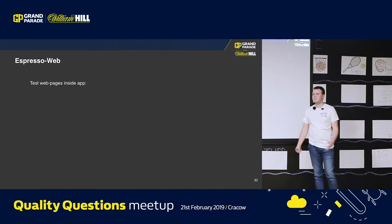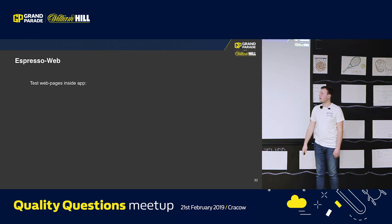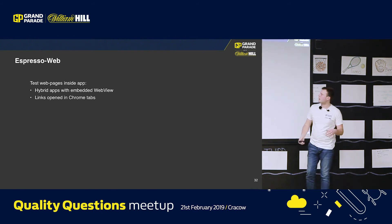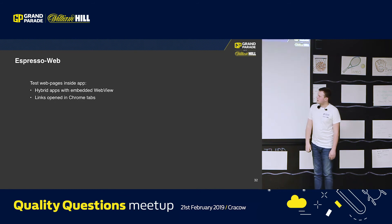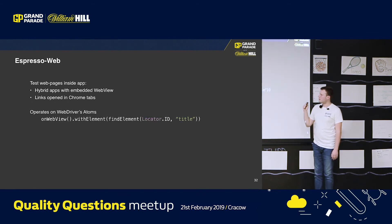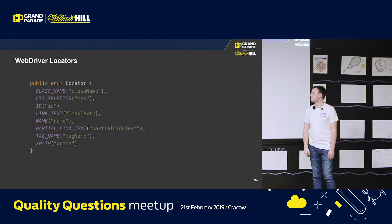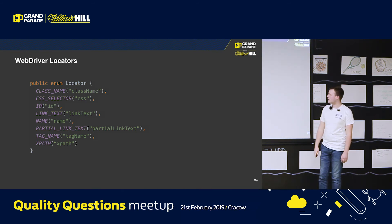Espresso also has a web sub-module for web testing, like Selenium, which could be very common for you. You may test web pages inside your application — it could be hybrid applications with an embedded web view, or links opened in Chrome tabs inside the application itself. Those pages are better tested separately, but you may need to test them. Espresso web operates on web driver atoms, so this part acts like find element. Those are locators that can be used to find elements, very similar to Selenium ones.